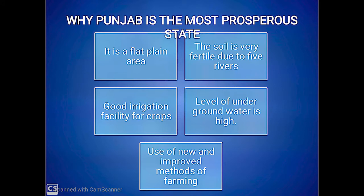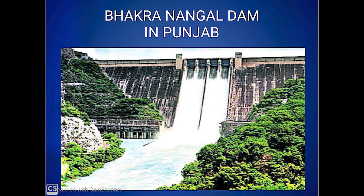Punjab has many reasons for its prosperity. It is blessed with flat plains and fertile soil, a good irrigation system, a high level of underground water, and new methods and technology in farming. However, at one point in time, excess use of fertilizers had a bad effect on the soil and made it marshy and infertile. Here we see the image of Bhakra Nangal Dam, which is built on the river Sutlej. This dam proved to be a boon for farmers of Punjab, providing electricity and water for irrigation.